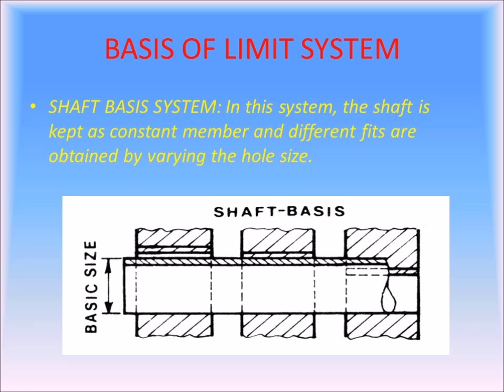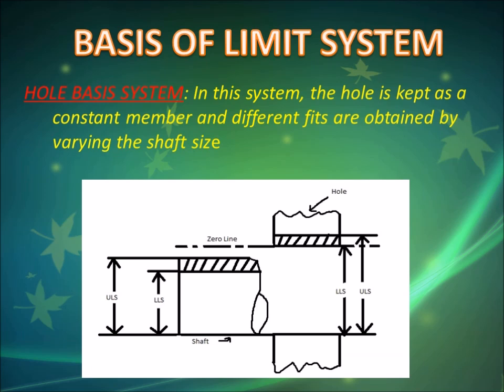The basis of system is of two types: shaft basis system and hole basis system. In the shaft basis system, the shaft is kept constant and divisions are made on the hole. In the hole basis system, the hole is kept constant and divisions are made on the shaft.